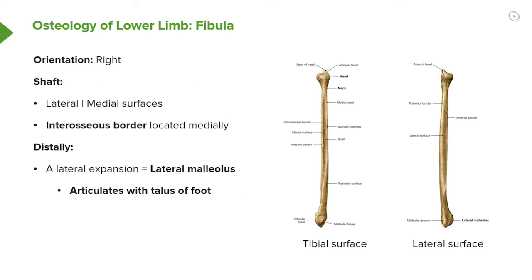As we go down the shaft we see lateral and medial surfaces, an interosseous border where the interosseous membrane passes between the two, and also this posterior border which we can see here.